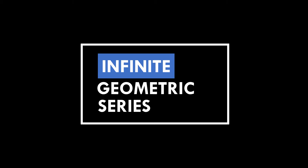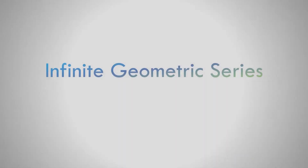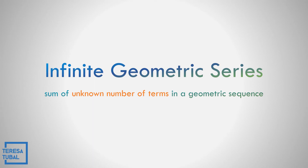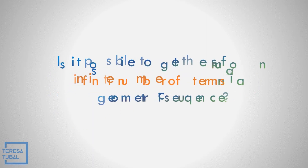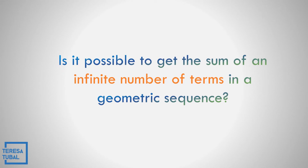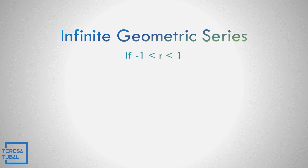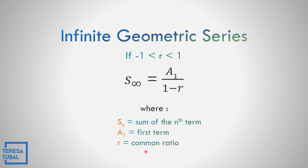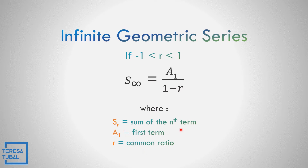So let us explore about the infinite geometric series. What is infinite geometric series? It is the sum of a known number of terms in a geometric sequence. Is it possible to get the sum of an infinite number of terms in a geometric sequence? Yes, it is possible. If the value of the common ratio is greater than negative 1 but less than 1, the formula is: the sum to infinity is equal to the first term all over 1 minus r. Where a sub n is equal to the sum of the n-term, a sub 1 is the first term, and r is the common ratio.